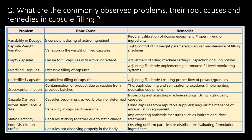What are the commonly observed problems, their root causes, and remedies in capsule filling? You can refer to this table for 10 commonly observed problems, their root causes, and remedies. The 10 commonly observed problems are: variability in dosage, capsule weight variation, empty capsules, overfilled capsules, underfilled capsules, cross contamination, capsule damage, inconsistent capsule size, static electricity, and poor dissolution profile.